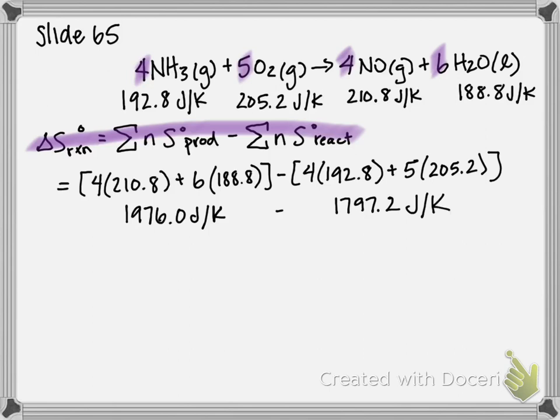And if we subtract those two from one another, the standard entropy change of our reaction is equal to 178.8 joules per Kelvin. And that is your final answer.